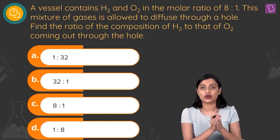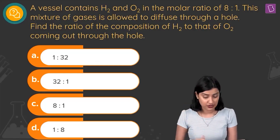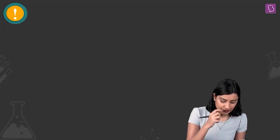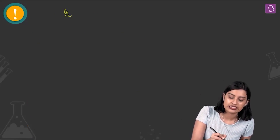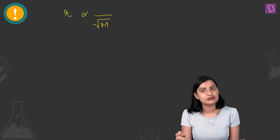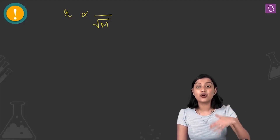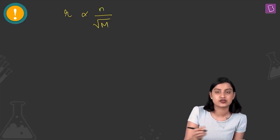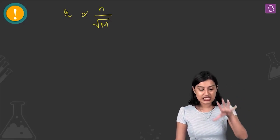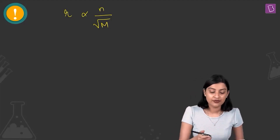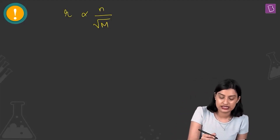We know that rate is directly proportional to 1/√M. Here we use the modified form of Graham's law: rate is directly proportional to n/√M, where n is the number of moles. Using this, the ratio of the rate of diffusion of hydrogen to the rate of diffusion of oxygen equals (moles of H2 / moles of O2) multiplied by √(molar mass of O2 / molar mass of H2).